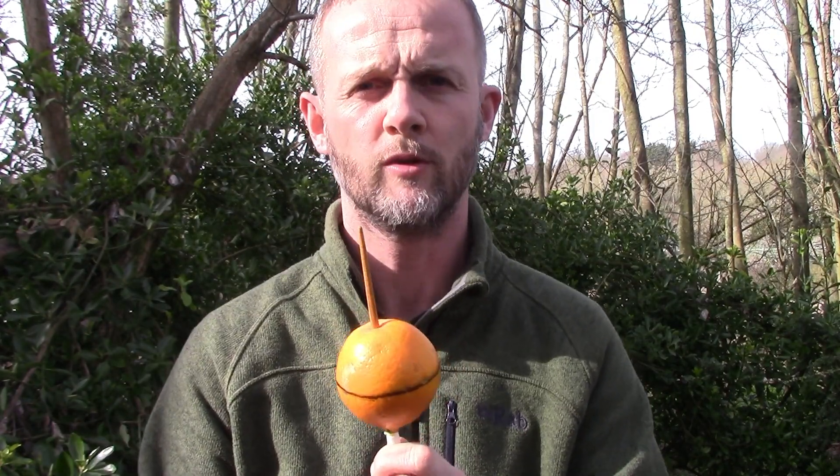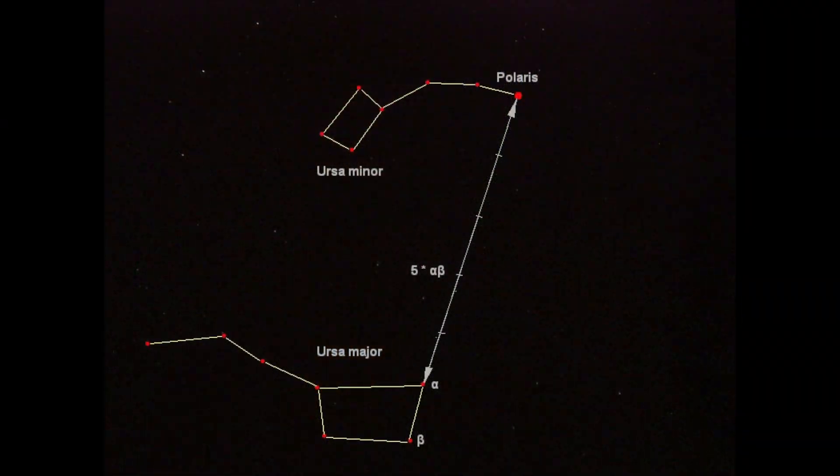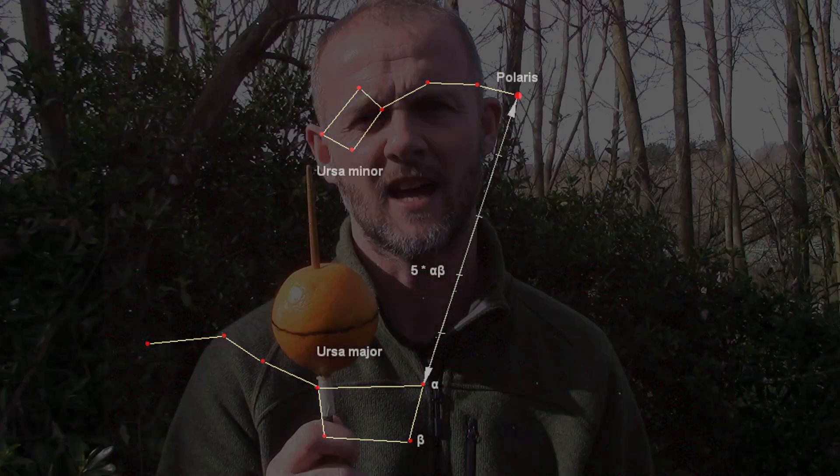Above true north, if you were to look up, within one degree you would see Polaris — sometimes known as the pole star or the north star. You may, depending on your celestial navigation knowledge, be able to identify that by looking for the plough or the big dipper to locate the position of that star. But if you were stood at that point on the earth's surface and looked up, within one degree you would be looking up at Polaris.